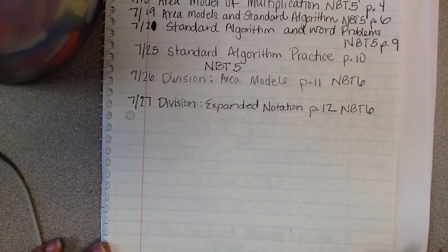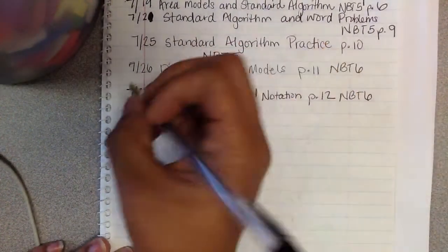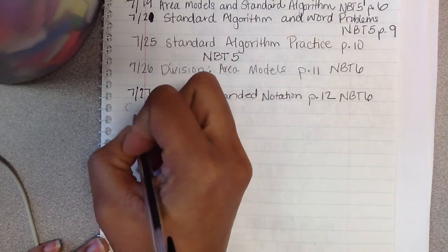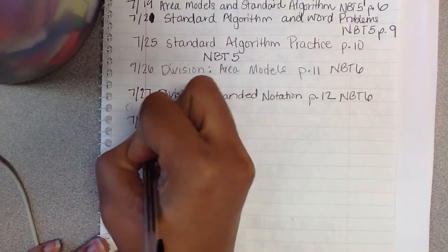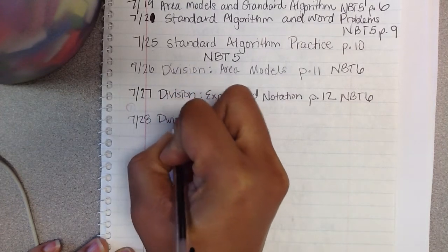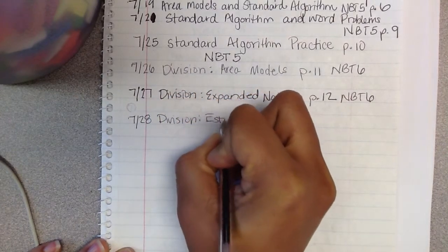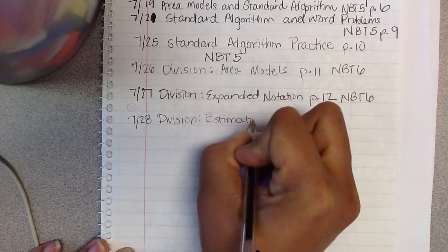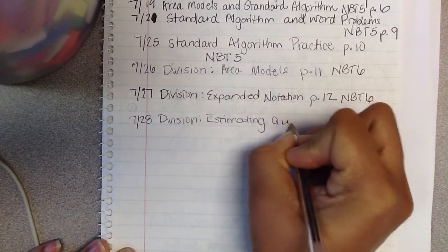Okay, today we're going to be talking about estimating quotients. So in your table of contents, go ahead and label with the date. Today is division, estimating, quotients.